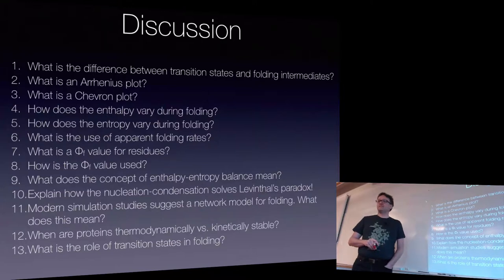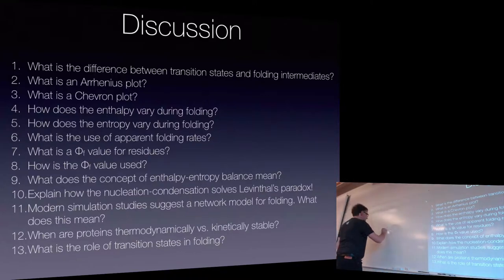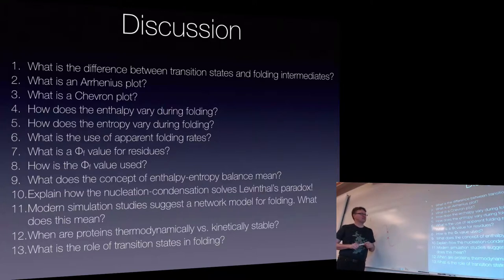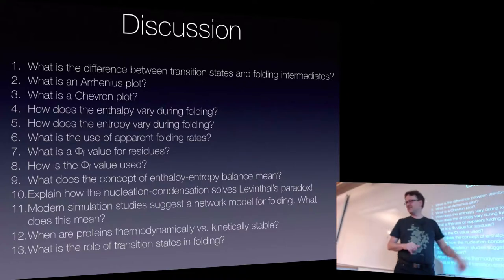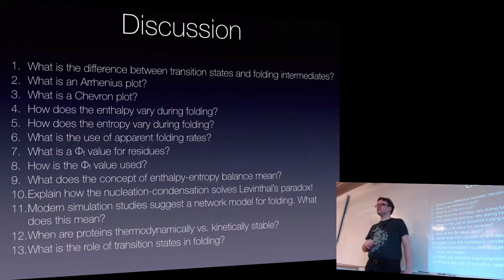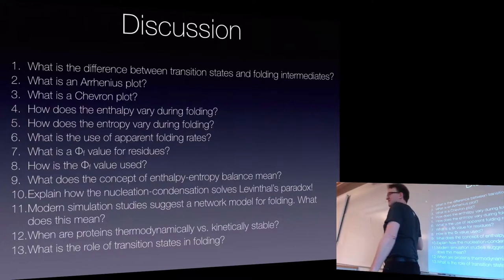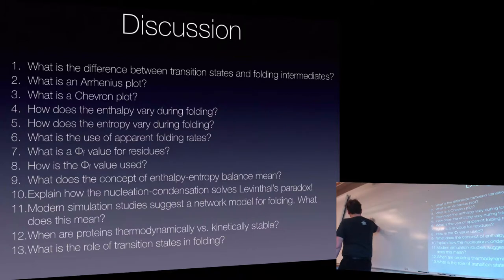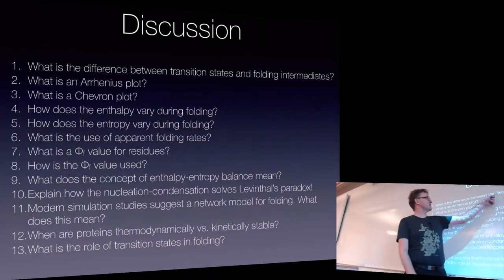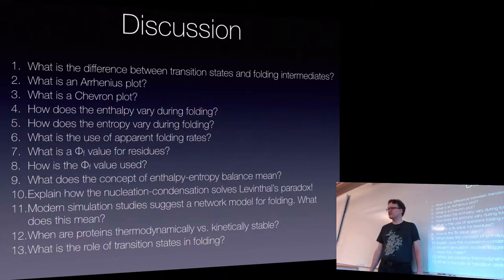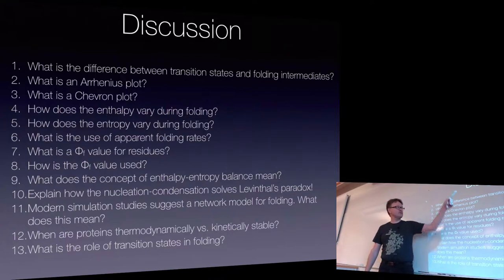Transition states have higher energy. If you draw an energy plot, transition states are local maxima. The important difference is that you can never observe a transition state directly — it's impossible, because you're not going to spend any time there. You can indirectly derive information about it from how long it takes to get over these barriers. Folding intermediates, on the other hand, are technically possible to observe, even if it's not easy.